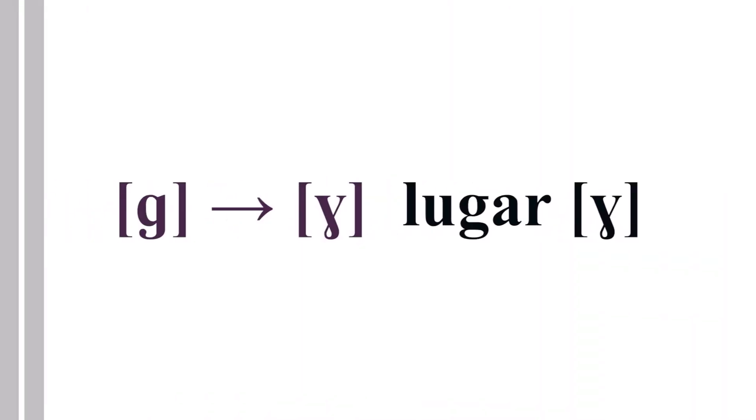Thus, the plosive G in the intervocalic position in the word lugar, which would be how people would pronounce the word if their first language is not Spanish. If they're learning Spanish, they might say lugar, which is understandable.